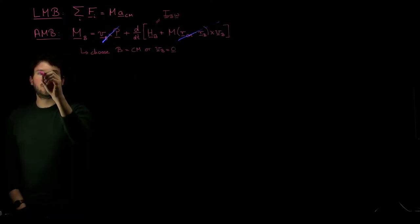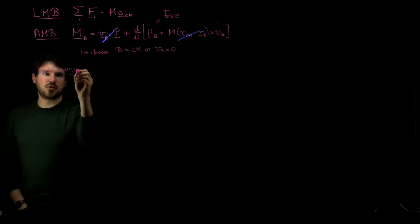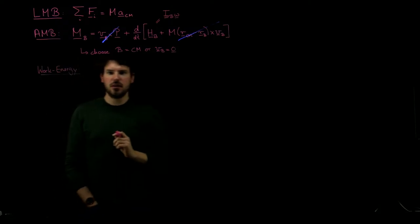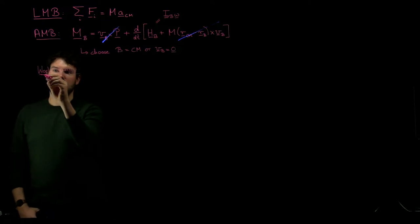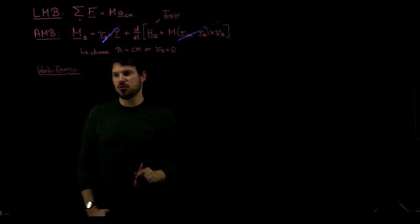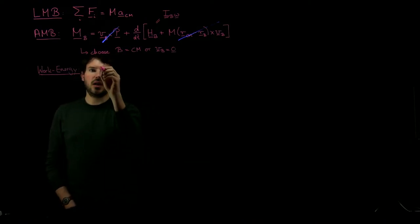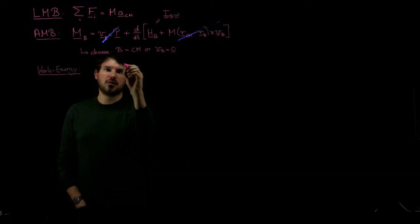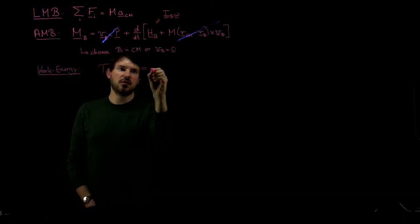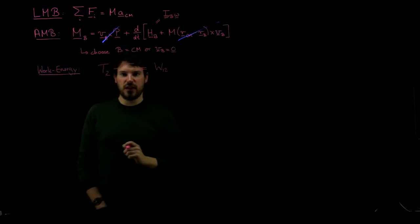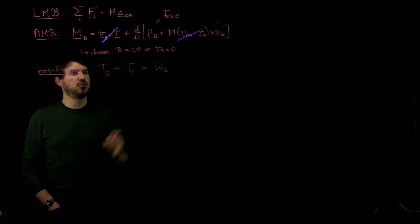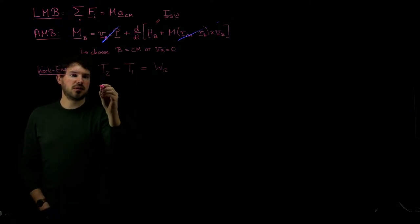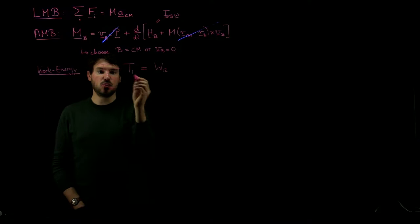Then the last thing we discussed was the work-energy balance. Work-energy balance for a rigid body is almost the same as for a particle. What we have to consider here is that the rigid body, in general, has translational and rotational motion, and hence it also has these two contributions to its energy. The kinetic energy at state 2 minus the kinetic energy at state 1 is still given by the work done by all forces acting onto the rigid body, which we can simplify if there's potential forces by introducing a potential.